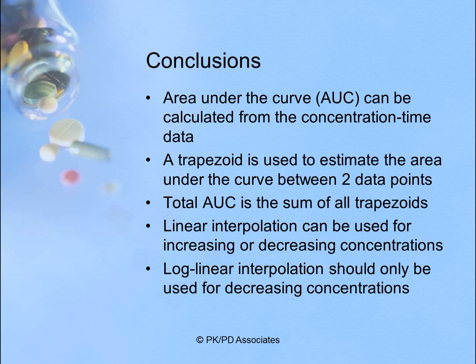In conclusion, the area under the curve, or AUC, can be calculated from concentration time data, and a trapezoid is used to estimate the area under the curve between two data points. The total AUC is the sum of all trapezoids. We talked about linear and logarithmic, or log-linear, interpolation.